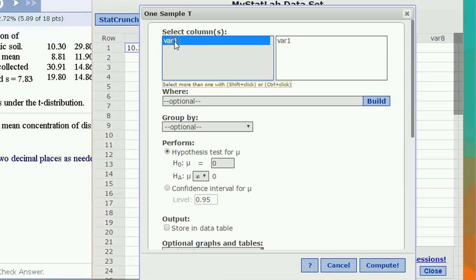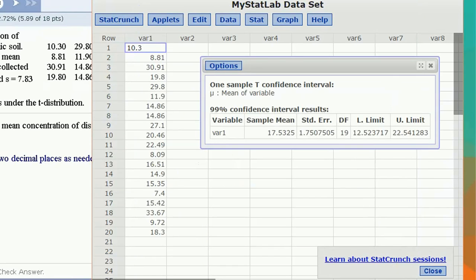Select the column in VAR1, and we select the confidence interval at a level of 0.99. Hit Compute, and you've got it. That's all there is to it.